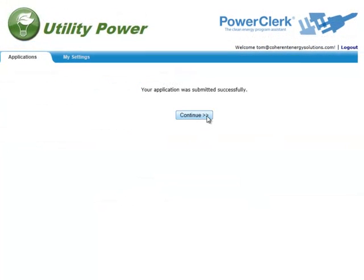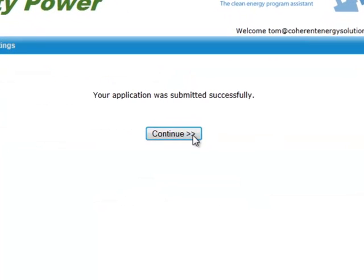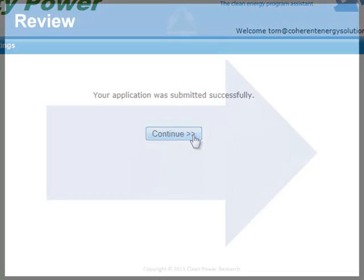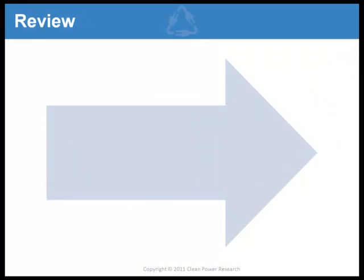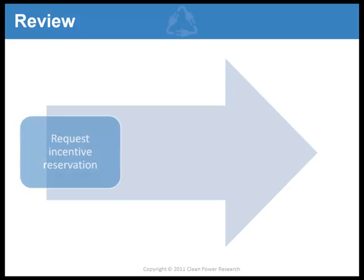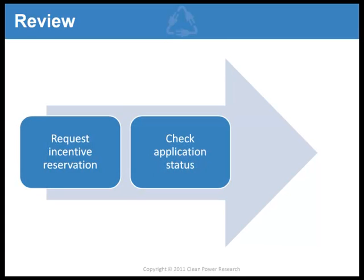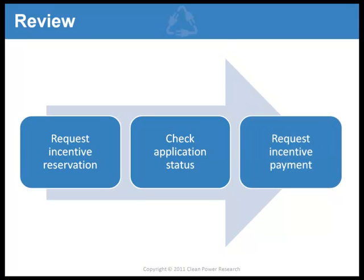Click the Continue button to continue to the Incentive Application list. This concludes the Incentive Payment segment of the PowerClerk Application Tutorial Series. In the Reservation Request segment, we demonstrated how to request an incentive reservation for your project and check the status of your application. In this screencast, we've shown you how to request payment of the incentive for your project. With PowerClerk, you have the power to efficiently and effectively manage your Solar Incentive Program applications.